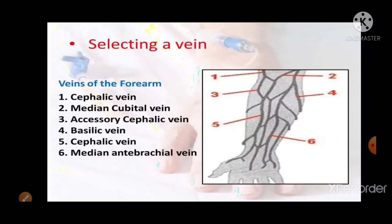When selecting a vein in the forearm, the options include: the cephalic vein, the median cubital vein, the accessory cephalic vein, the basilic vein, and the median antebrachial vein.